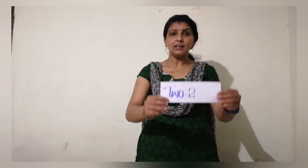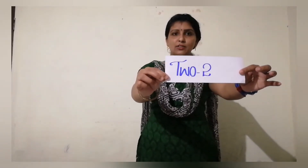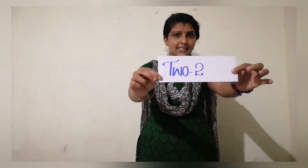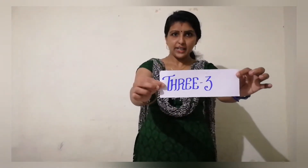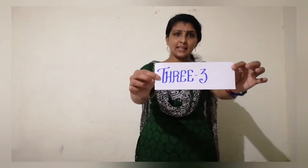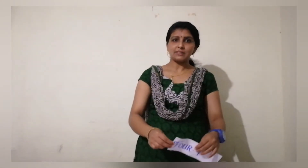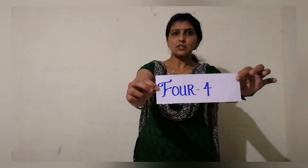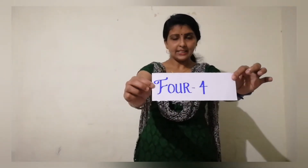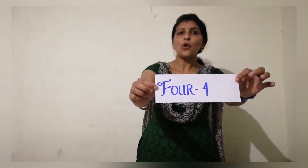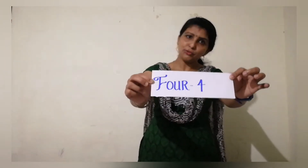And the second number, number 2. Can you say the spelling? T, W, O. 2. Next number, 3: T, H, R, E, E. 3. Then the next number, 4. Can you say the spelling? S, F, O, U, R. 4.